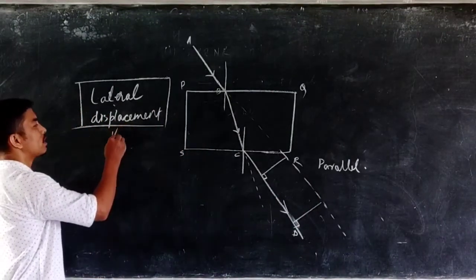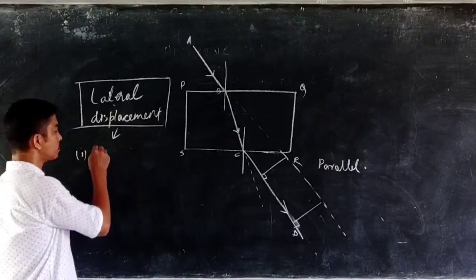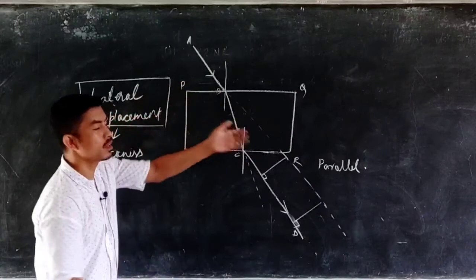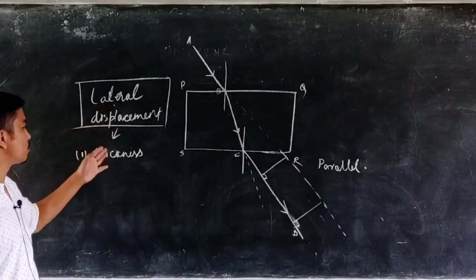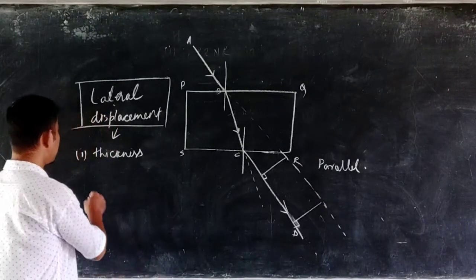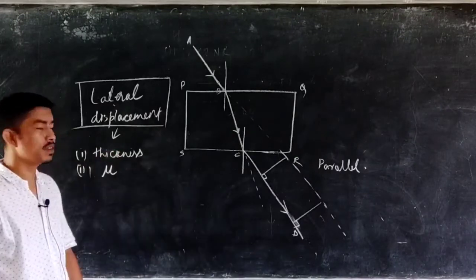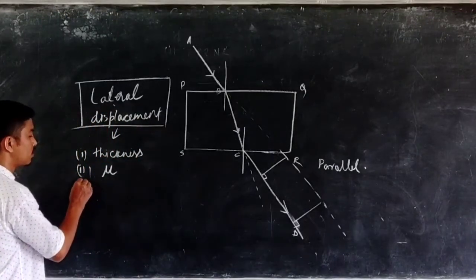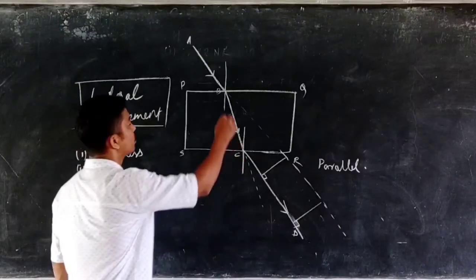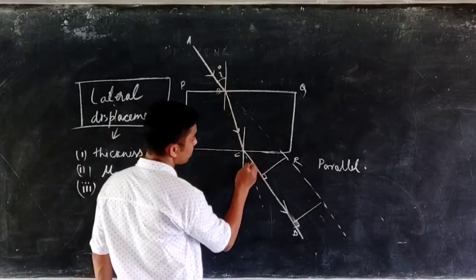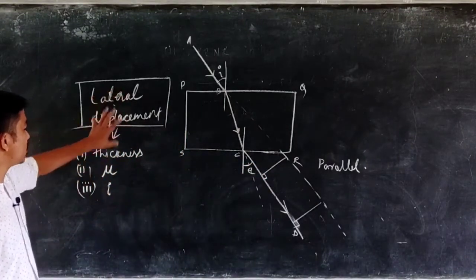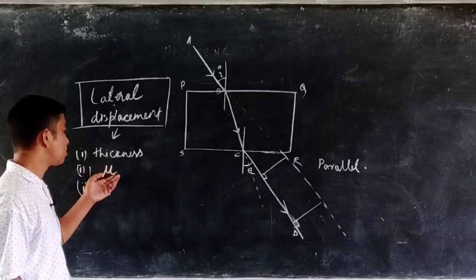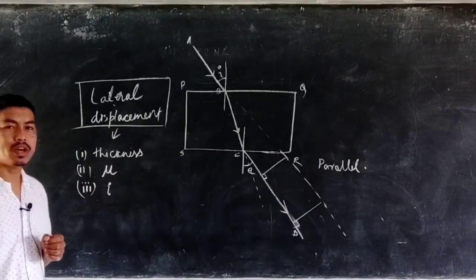There are certain factors on which lateral displacement depends. The first is the thickness of the glass slab — the greater the thickness, the more the lateral displacement. The second factor is the refractive index mu — higher the refractive index, more will be the lateral displacement. The third factor is the angle of incidence i. The lateral displacement is directly proportional to all three: thickness, refractive index of the glass, and the angle of incidence.